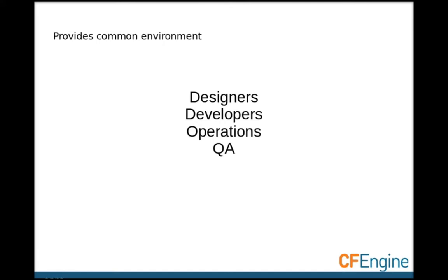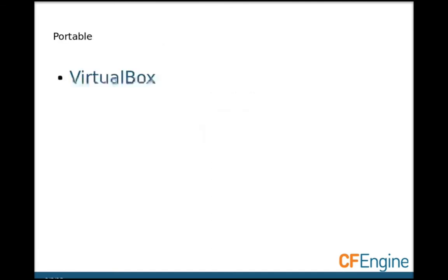Vagrant can provide a common environment that anybody can work from. It doesn't matter if they're designers, operators, QA, or developers. If they're running Windows, Mac, or Linux and they have a need for a test environment, Vagrant could be useful to them. Vagrant allows you to create an environment once, encode it in a single text file, and then share it with other people. This could live right alongside your source control repository for your project.